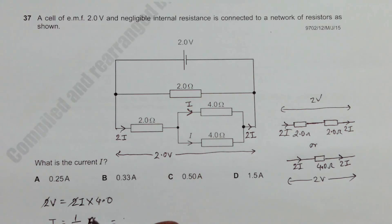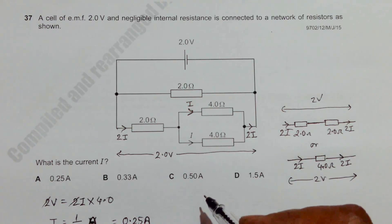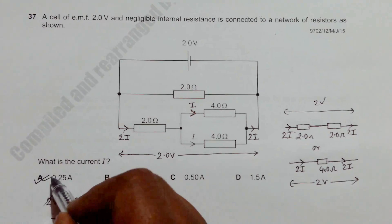So it should be 0.25 ampere. So the value of I should be 0.25 amperes, which is choice number A.